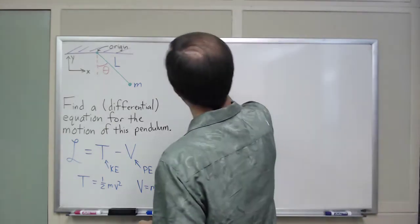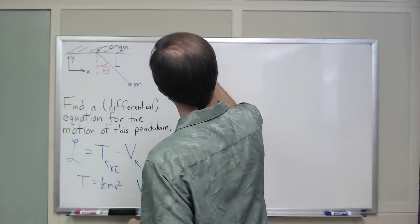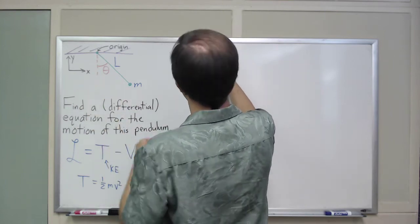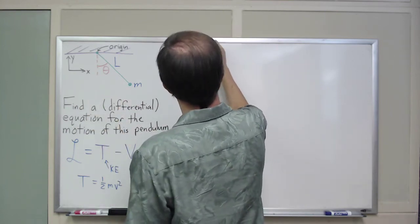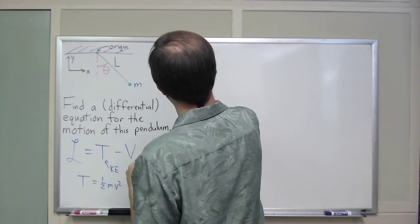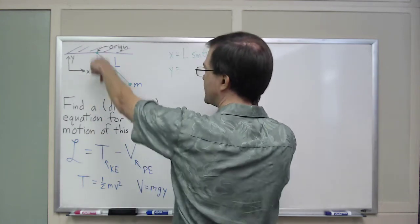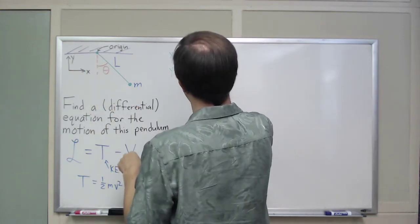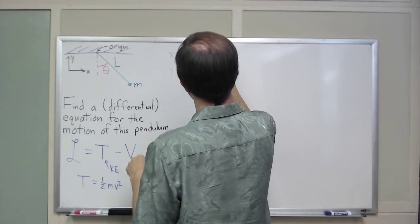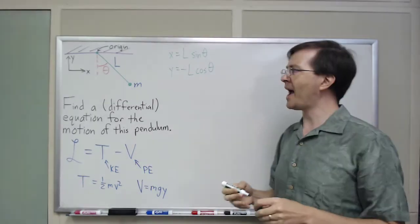So, x equals L times the sine of theta, and y equals, it's negative, negative L cosine theta. So those are my x and y.